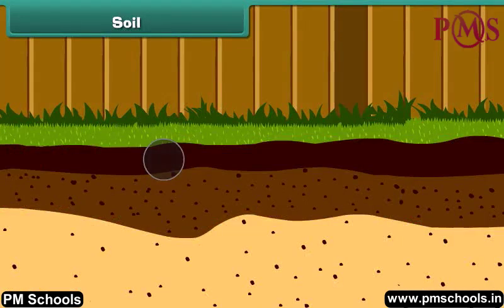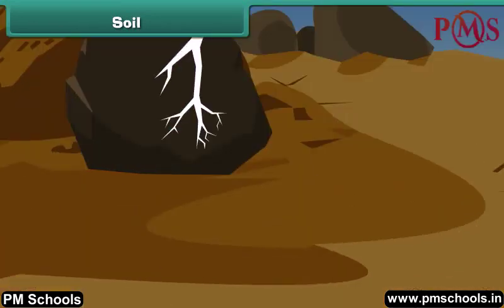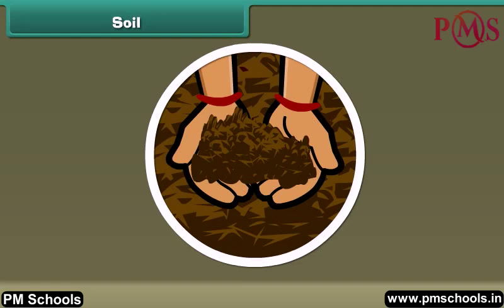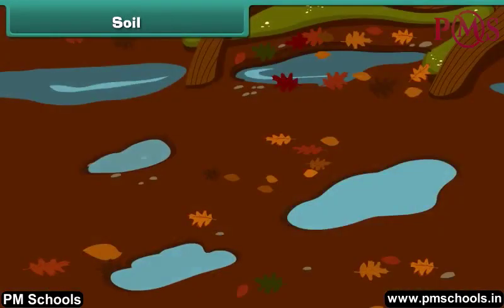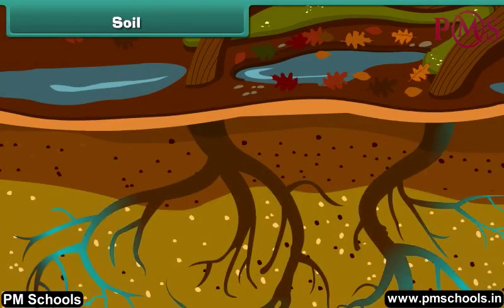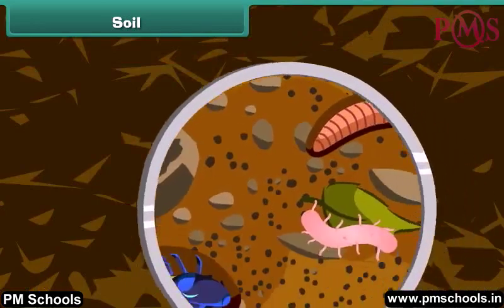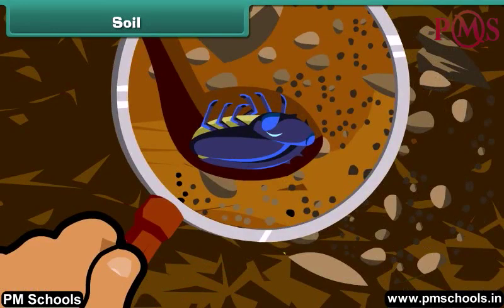Soil is a thin layer of earth's crust. It is formed by the breaking up of rocks into small pieces by water or wind. Soils differ in their texture — some are fine, others are coarse. Soils also differ in their color; at some places they are red, at others black. Soil stores nutrients and water. Plants draw water and minerals from soil, so soil acts as a medium for plants to grow. It also provides shelter to ants, earthworms and other insects and animals who make their home in the soil.